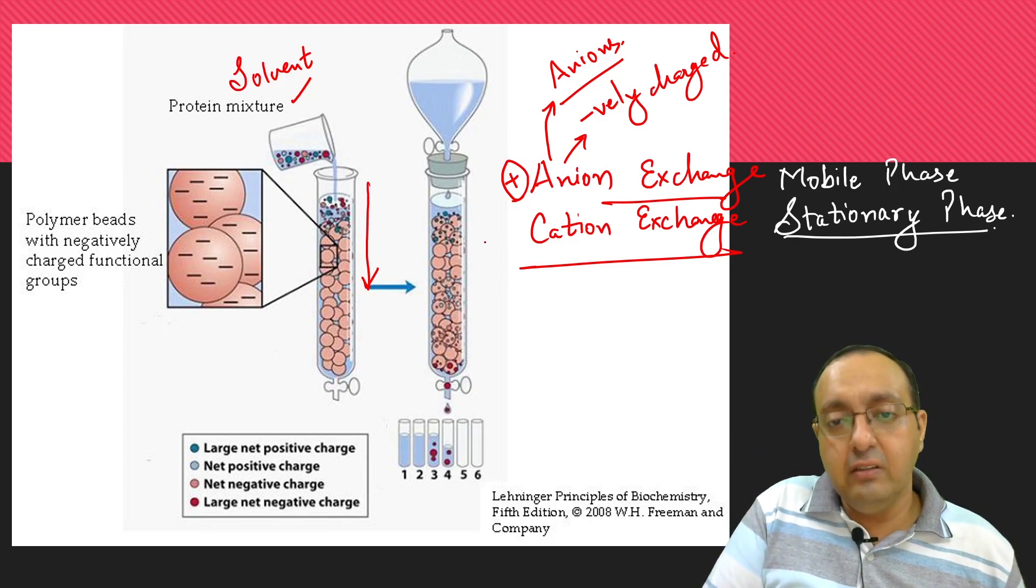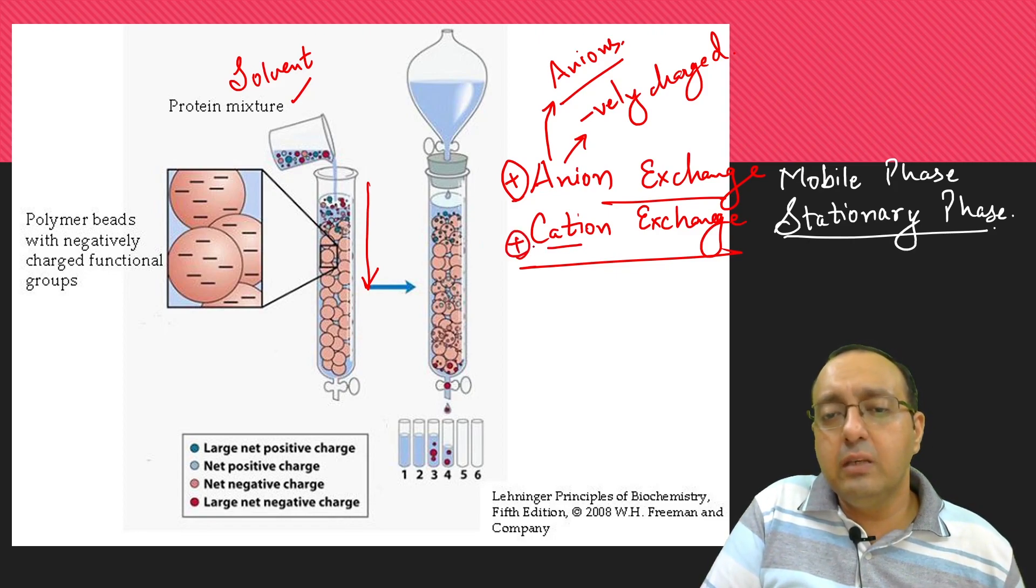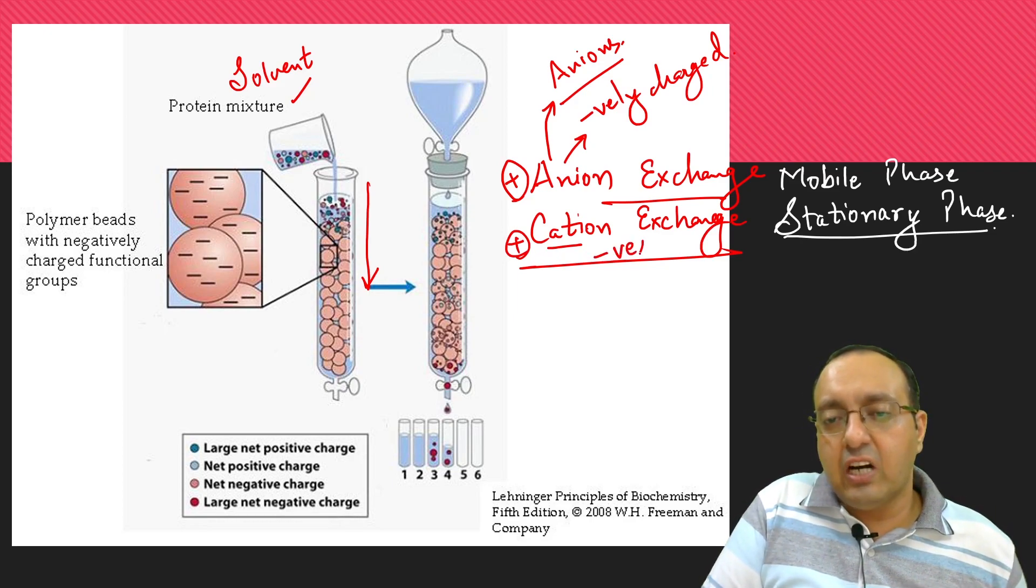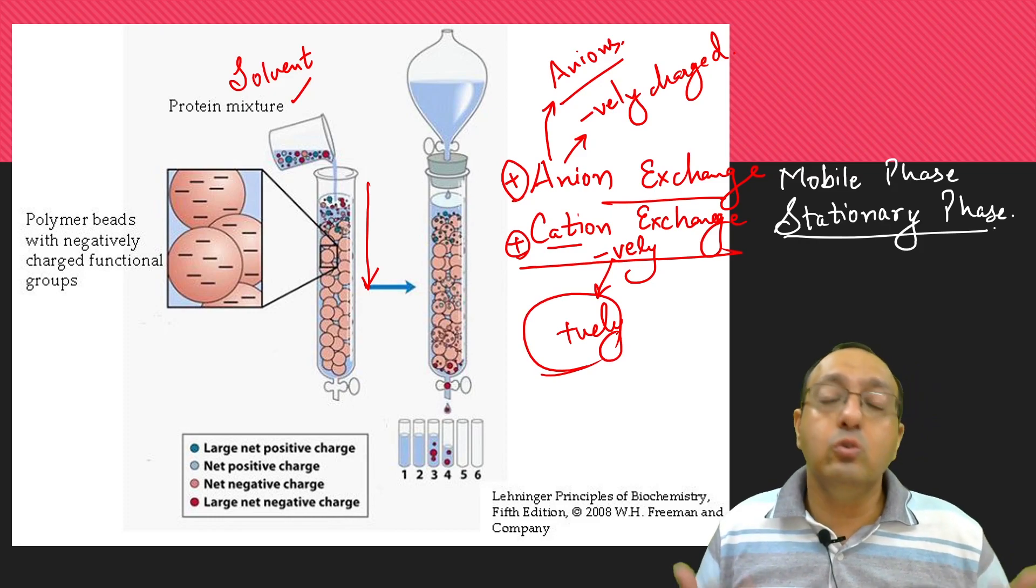Conversely, for cation exchange chromatography, cations are usually positively charged. But here, the stationary phase or the beads are negatively charged and they like to bind to positively charged proteins.